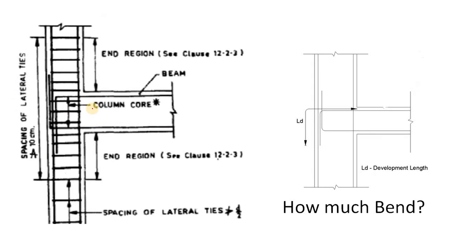Say this is your beam-column junction and you have to provide the development length for this beam. This is your beam and the tension force is applied on this bar due to the applied moment. The development length must be provided from this critical section point — you cannot end your bar here. If you do, it will simply pull out from your member.